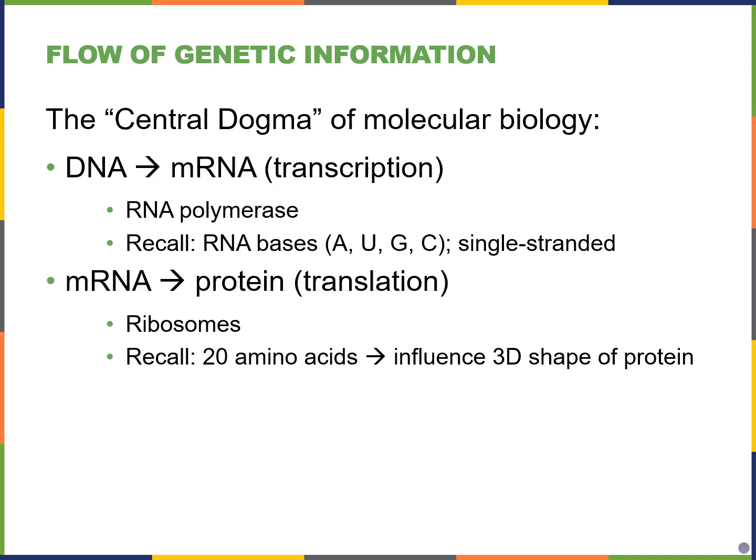How do we transcribe DNA into messenger RNA? The main enzyme that completes this process is known as RNA polymerase. That makes sense because, from the previous chapter, when we were copying DNA, that was performed by DNA polymerases. Now we're making messenger RNA, so we're using RNA polymerase.